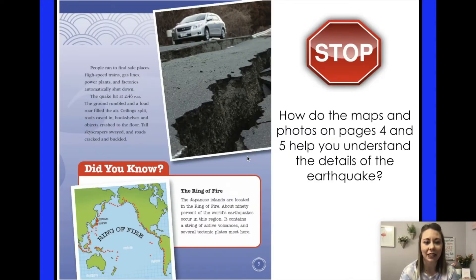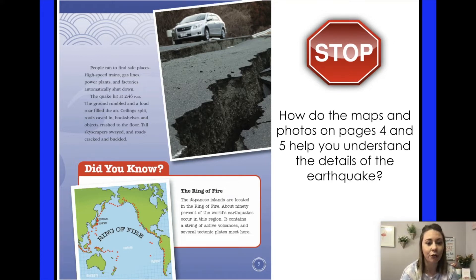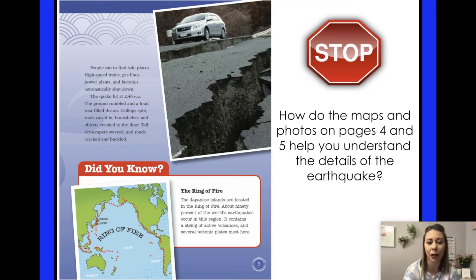People ran to find safe places. High-speed trains, gas lines, power plants, and factories automatically shut down. The quake hit at 2:46 p.m. The ground rumbled and a loud roar filled the air. Ceilings split, roofs caved in, bookshelves and objects crashed to the floor, tall skyscrapers swayed, and roads cracked and buckled. You can see in the picture where the road is cracked open.